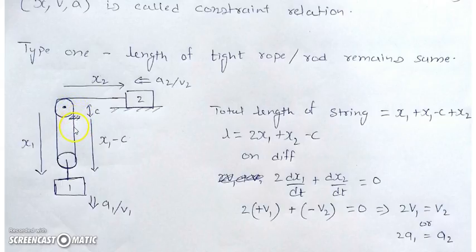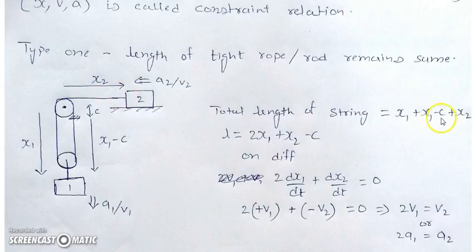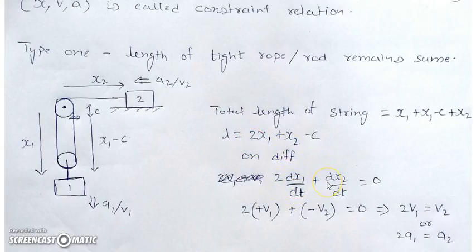In terms of x1 and x2 we calculate the length of the string. Any constant distance — such as the fixed length between the pulley center and the attachment point — can be called c or neglected, since any distance that remains constant has no effect on the constraint relation. The total string length is x1 plus (x1 minus c) plus x2. Differentiating gives 2(dx1/dt) + (dx2/dt) = 0, since c and L are constants.